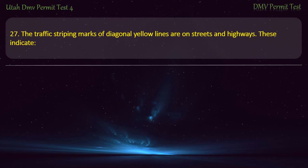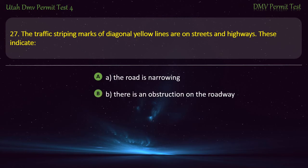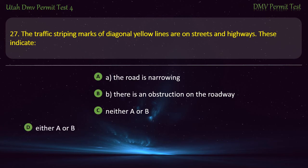Question 27. Traffic striping marks of diagonal yellow lines are on streets and highways. These indicate: A. The road is narrowing; B. There is an obstruction on the roadway; Neither A or B; or Either A or B? Answer: Either A or B.